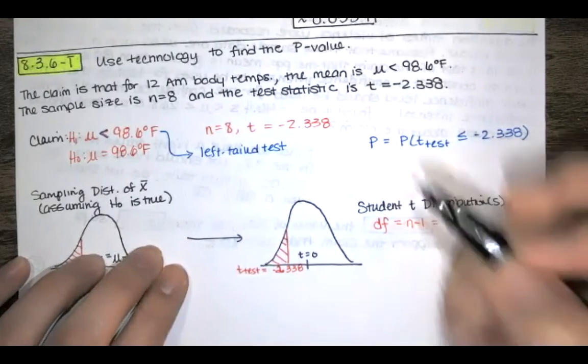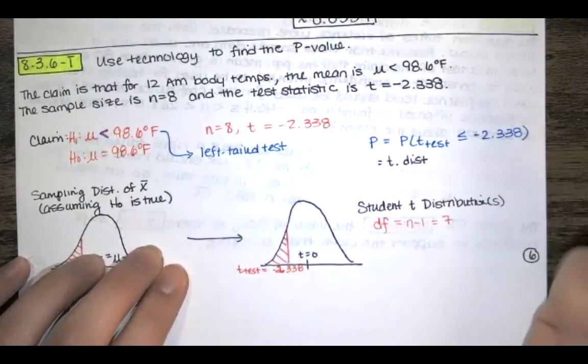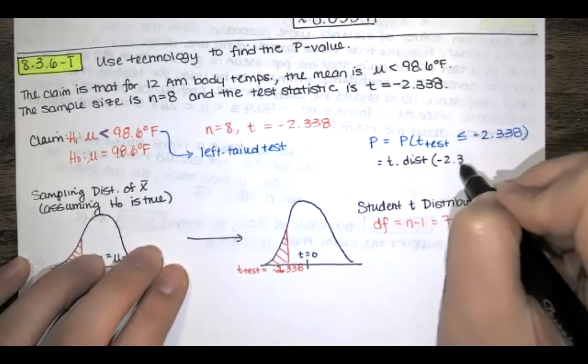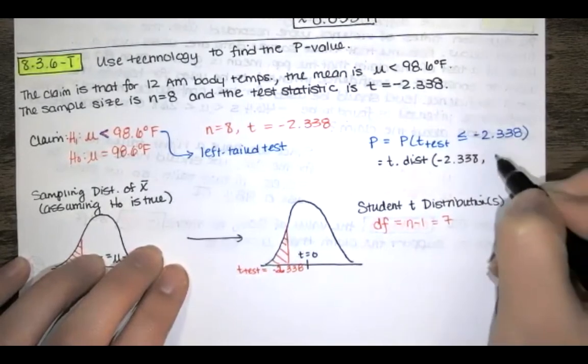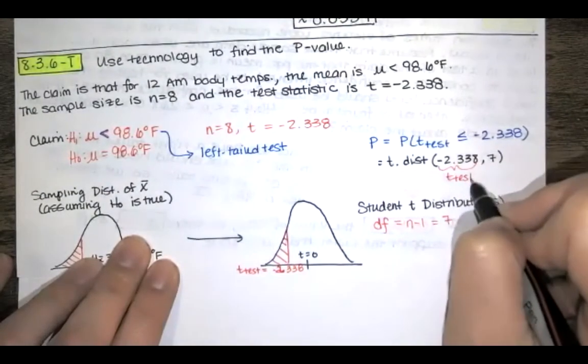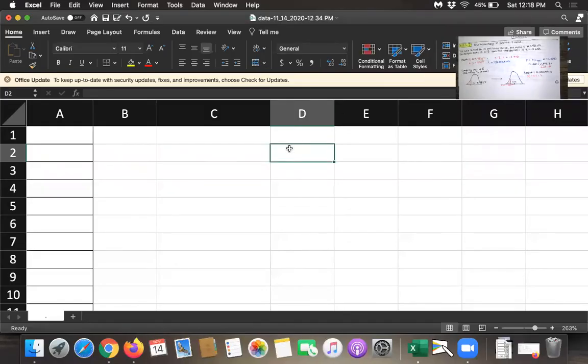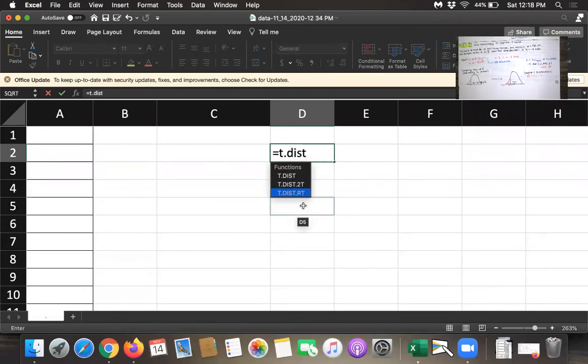So if I want to find this probability using Excel, I'll use this function t.dist. That's going to give me area to the left of this test statistic, negative 2.338, and then I want the degrees of freedom right there. So you've got this and that. This is easy enough to find in Excel. You just type equals t.dist, and you see the other t distributions that you can use. You can do area in two tails. You can do area in the right tail, or if you want area in the left tail, it's just t.dist, open parentheses.